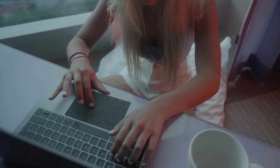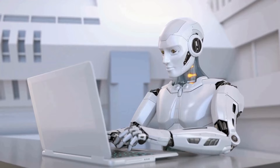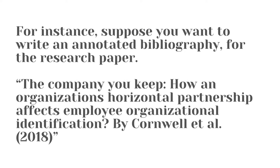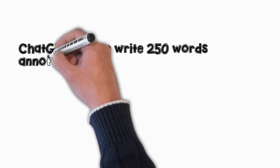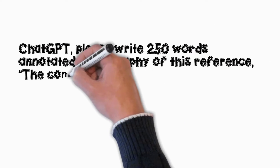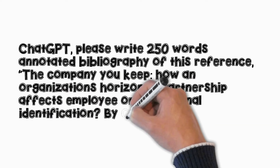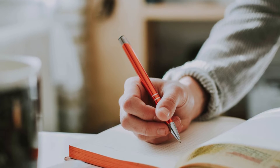Before you start, gather the most relevant research papers and their PDF files from the internet. You can ask ChatGPT to directly write an annotated bibliography — note that uploading a full PDF doesn't provide reliable results with ChatGPT. For instance, suppose you want to write an annotated bibliography for the paper "The Company You Keep: How an Organization's Horizontal Partnership Affects Employee Organizational Identification" by Cornwell et al. (2018). You can give ChatGPT the prompt: "Please write a 250-word annotated bibliography of this reference." You can also ask ChatGPT to write the summary and evaluation parts separately to produce more reliable results.